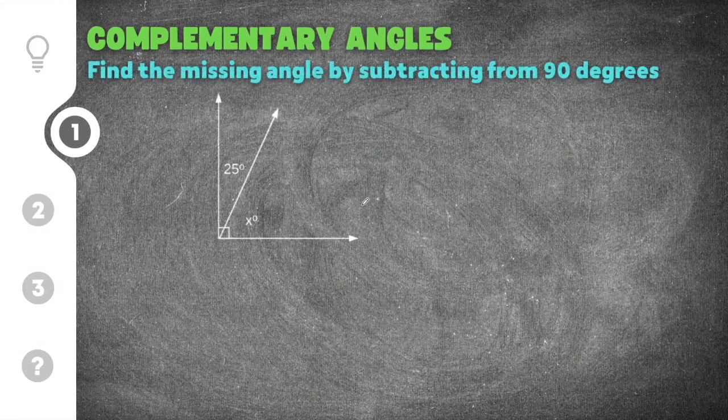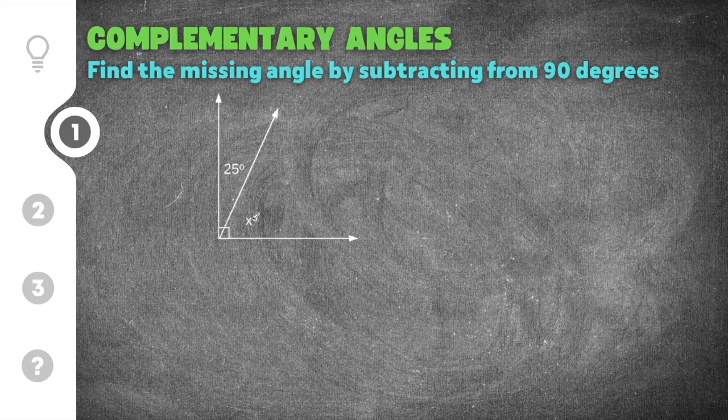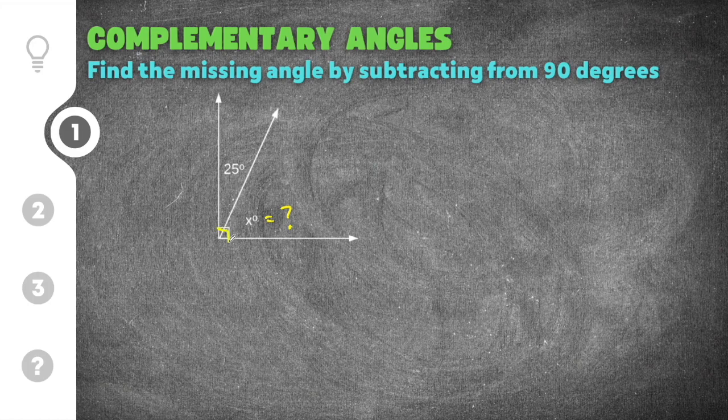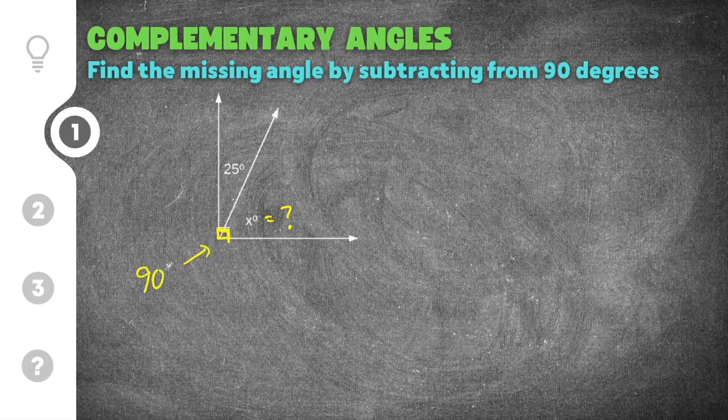Alright, let's go ahead and jump down to the first practice problem. This problem gives us a little diagram here and it shows two angles. So we have our first angle of 25 degrees. We have our second angle of x, which we do not know. So this is the angle we're going to be looking for. You can see we have a right angle symbol here, which indicates that the two angles together have to add up to 90 degrees.